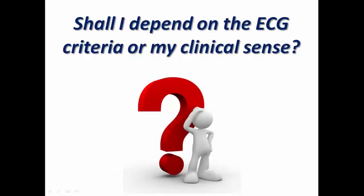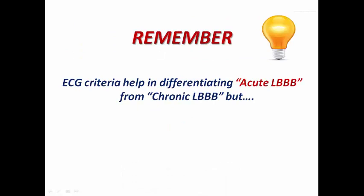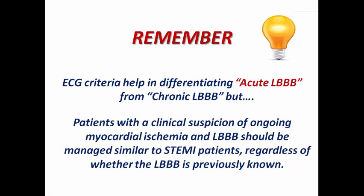The question now is: shall I depend on ECG criteria alone to differentiate acute from chronic left bundle branch block, or also on my clinical sense? ECG criteria help us a lot using the Sgarbossa criteria, or the uncommon signs such as the Chattman and Cabrera signs. However, a patient with clinical suspicion of ongoing myocardial ischemia and left bundle branch block should be managed similar to a STEMI patient, regardless of whether the left bundle was previously known. If your clinical sense tells you the patient is clinically unstable with new typical chest pain and ECG criteria are not clearly differentiating, let your clinical sense take priority over ECG criteria alone.